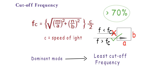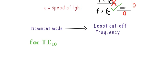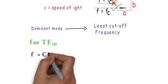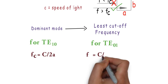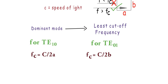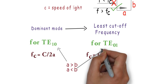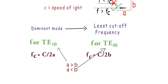The value of cutoff frequency will be minimum when one of the m and n is zero. It depends on the values of a and b. For TE10 mode, cutoff frequency will be c divided by 2a and for TE01 mode, cutoff frequency will be c divided by 2b. Here if a is greater than b then TE10 will be dominant mode and if a is less than b then TE01 will be dominant mode. So dominant mode depends on larger dimension.